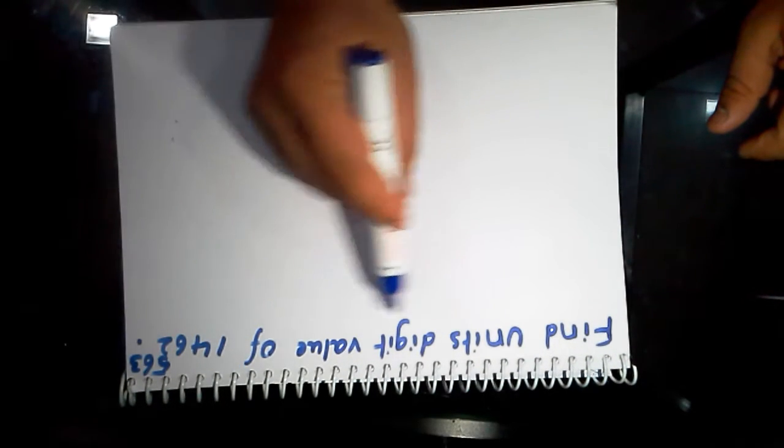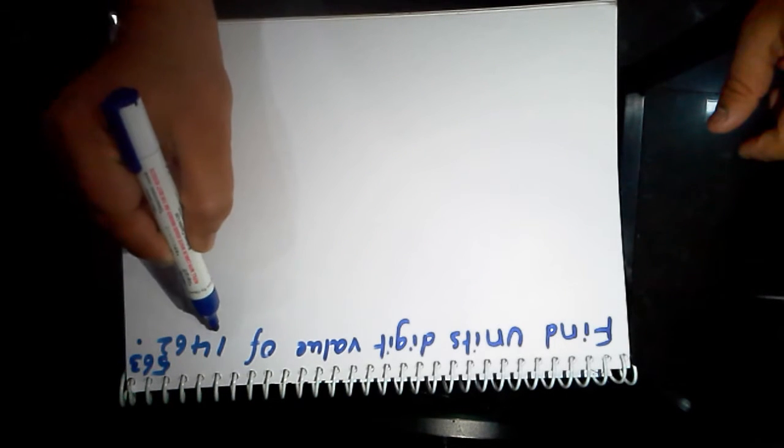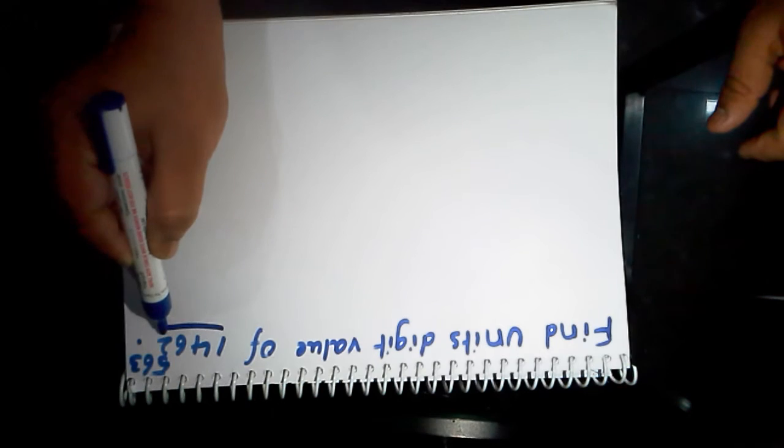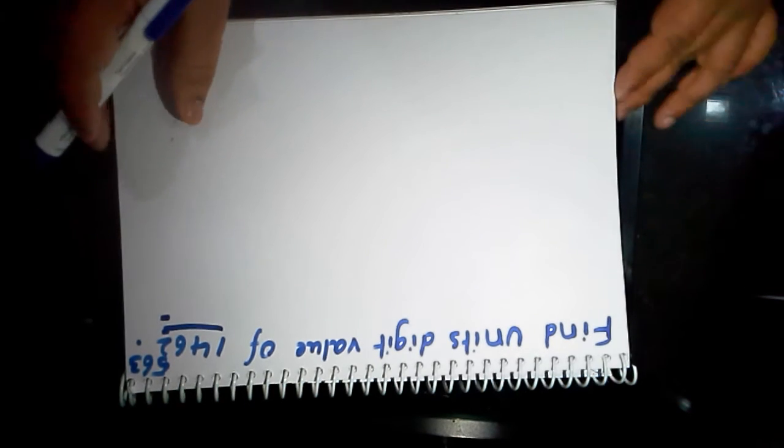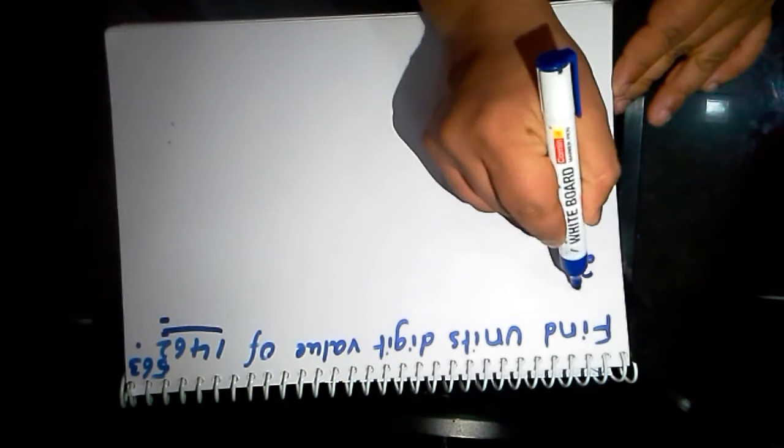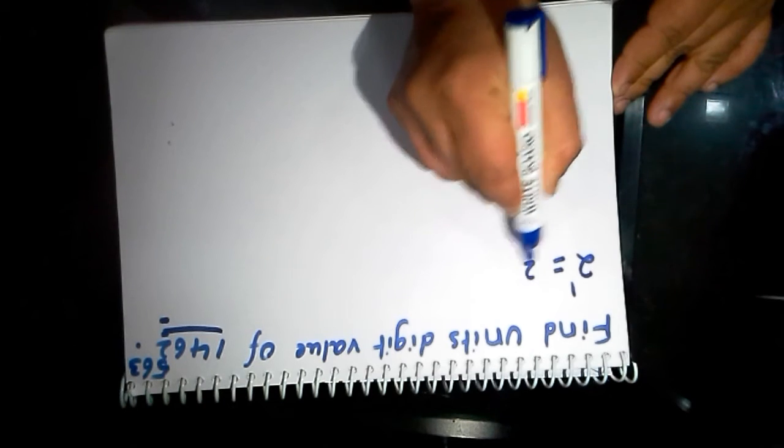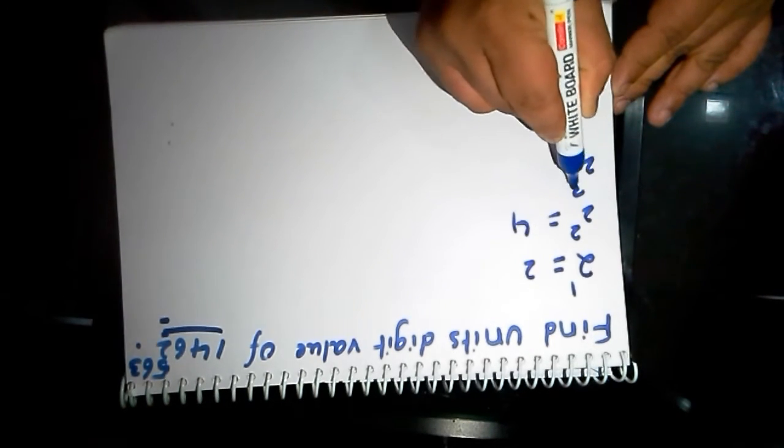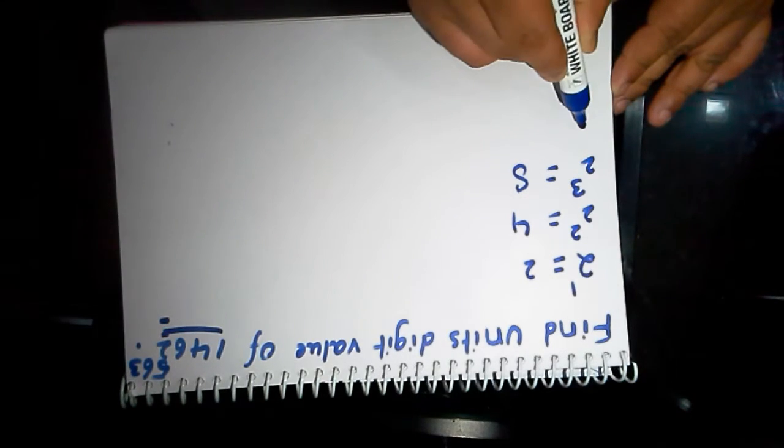We will discuss the units digit value. The base value is ending with 2. Now, 2 power 1 is equal to 2, 2 square is equal to 4, 2 cube is equal to 8, 2 power 4 is equal to 16.